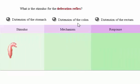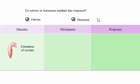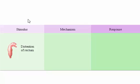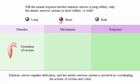What is the stimulus for the defecation reflex? Do nerves or hormones mediate this response? Will the neural response involve extrinsic nerves (a long reflex), only the enteric nervous system (a short reflex), or both? Extrinsic nerves regulate defecation, and the enteric nervous system is involved in coordinating the actions of the rectum and colon.